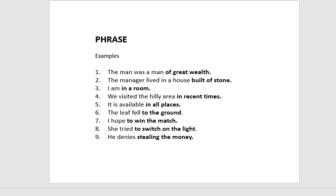Now we will discuss what a phrase is and how to recognize it. Example one: 'The man was a man of great wealth.' Look at 'of great wealth' — it is a part of the sentence but does not give full meaning. There is no verb: 'of' is a preposition, 'great' is an adjective, 'wealth' is a noun. 'The man' is the subject and 'was' is the main verb of the whole sentence, not of the phrase.